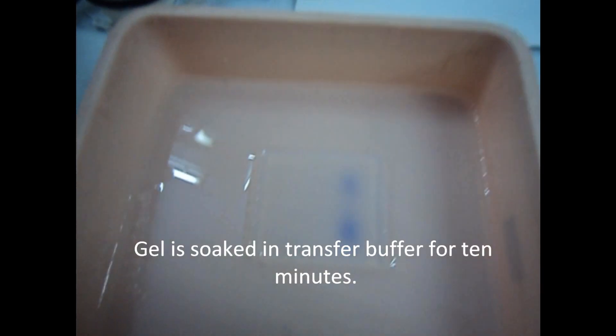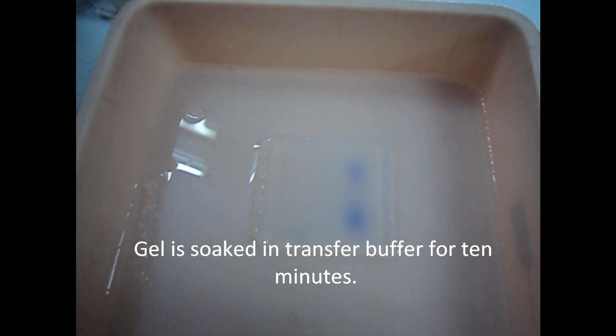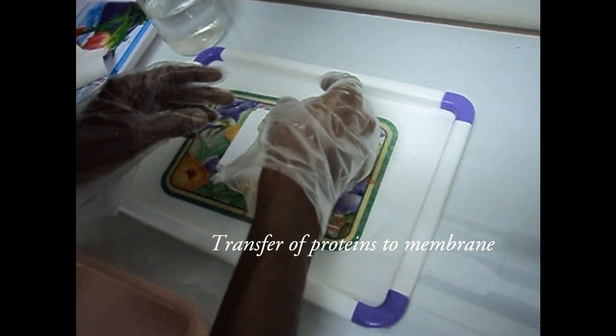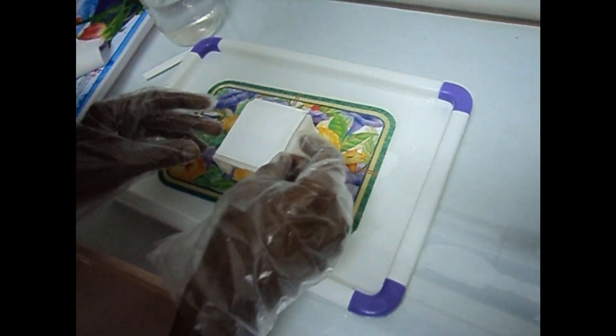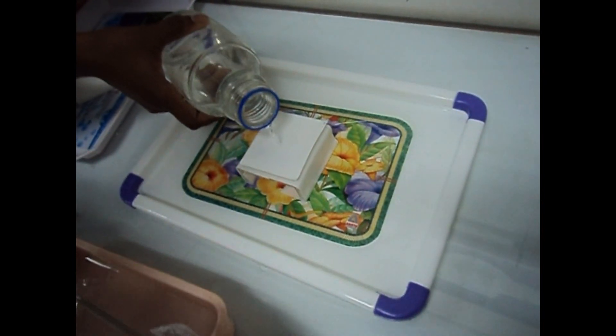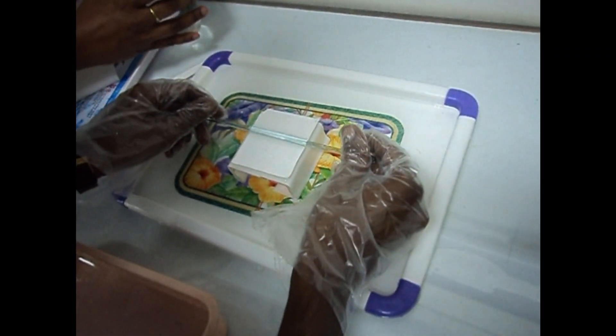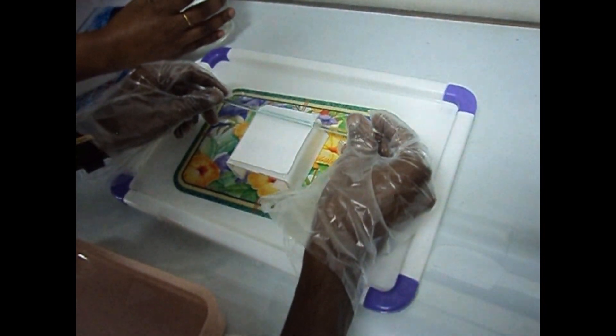The gel should be soaked in transfer buffer for 10 minutes. A nitrocellulose membrane, approximately the size of the gel, must be pre-soaked in western transfer buffer for 5 minutes. The membrane should be handled with gloves and clean forceps to avoid contamination with extraneous proteins.